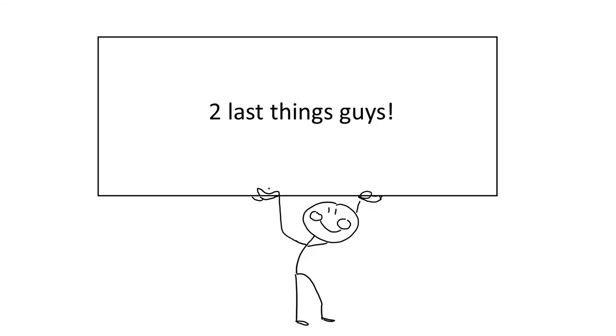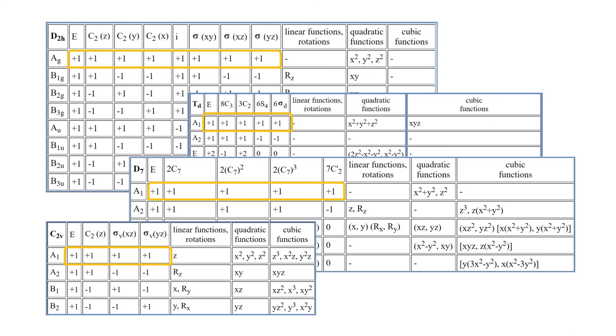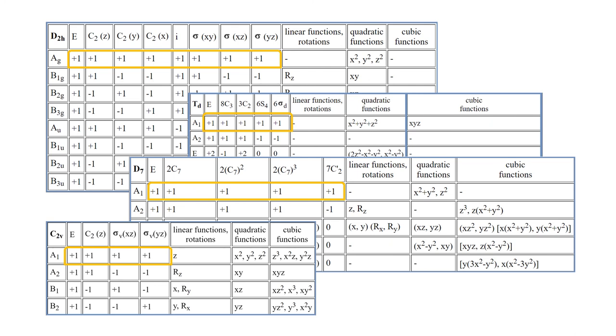There are two last things that I would like to point out. Notice that in every table, the first irreducible representation has plus 1 in every entry. This representation is called fully symmetric. So what?